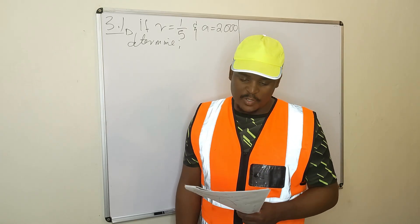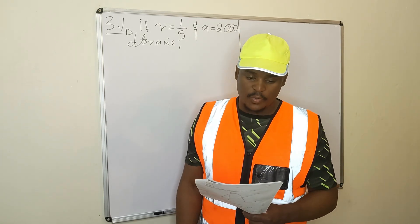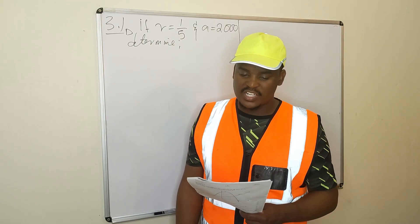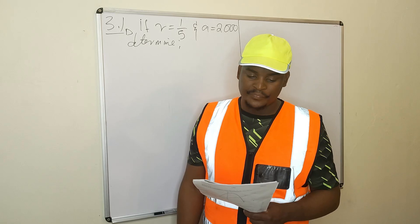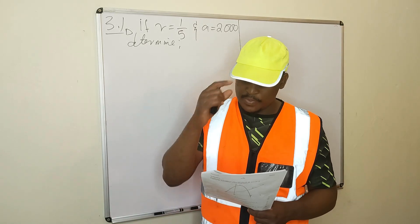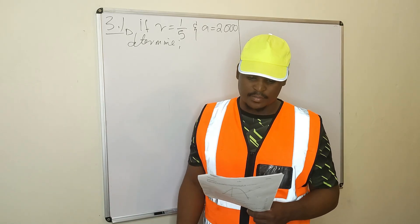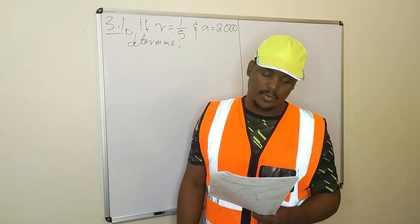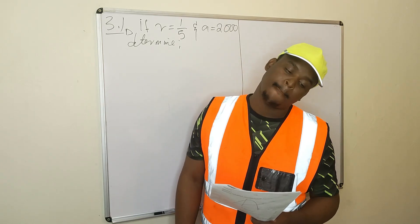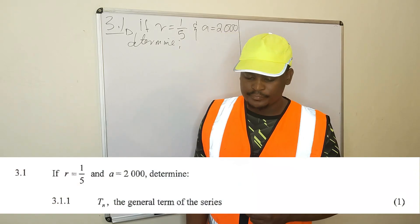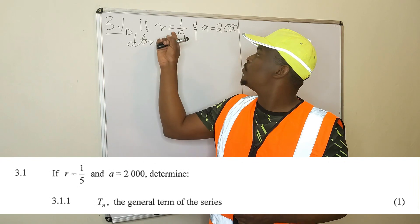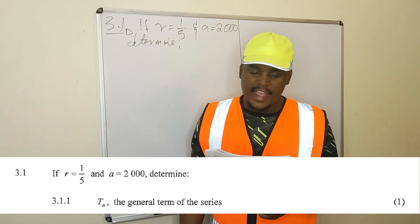Hello, thank you for watching this video. In this video we're doing question 3 of May/June 2021 Mathematics Paper 1. This question consists of geometric series. I'll read question 3.1 and then proceed to the other questions that follow. We are given a ratio of 1 over 5.